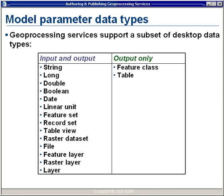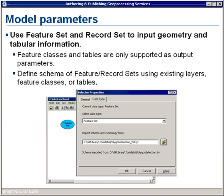The first thing we're going to look at is model parameter data types. Geoprocessing services support a subset of the data types that ArcMap and ArcCatalog support. We can submit text, numeric, and date information. We can support layers from our map document and raster data sets as inputs and outputs. Feature classes and tables are only available as outputs. So if we want to use a feature class, table, or geometry information as input, we have to use a feature set and a record set to submit that geometry and tabular information.